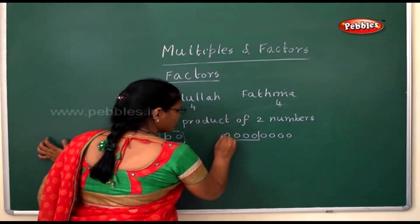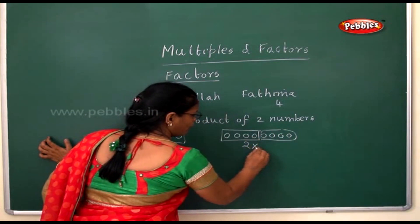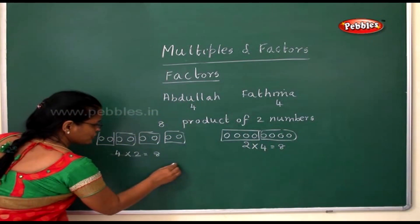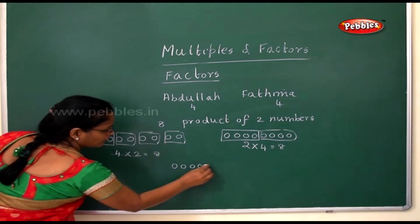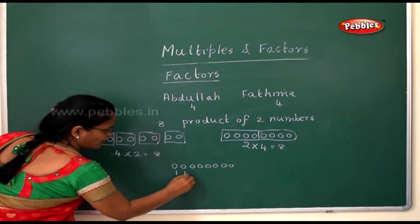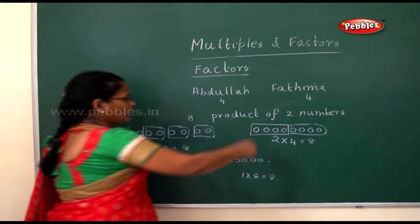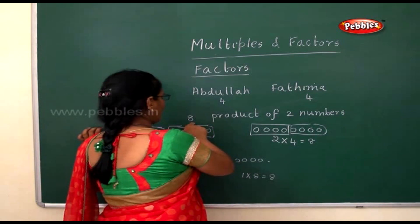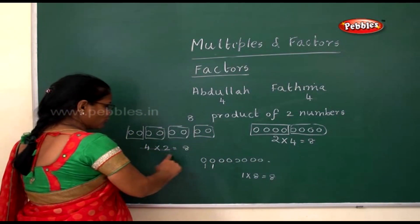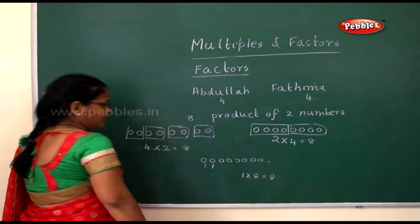Then she tried another way: two into four is eight. And yet another way: she took one group of eight, so one into eight is eight. So Fatima wrote three expressions for the product number eight — four twos are eight, two fours are eight, and one eight is eight.